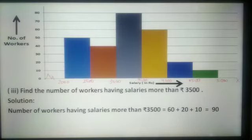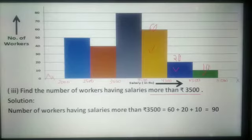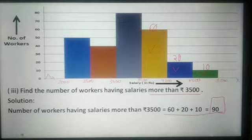In the next question, find the number of workers having salaries more than rupees 3500. When we see this histogram, the interval 3500 to 4000 has 60 workers, between 4000 to 4500 there are 20 workers, and between 4500 to 5000 there are 10 workers. So we add all three frequencies: 60 plus 20 plus 10 equals 90. So 90 workers have salaries more than rupees 3500.